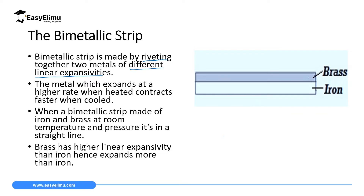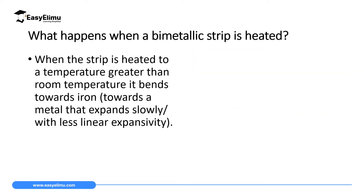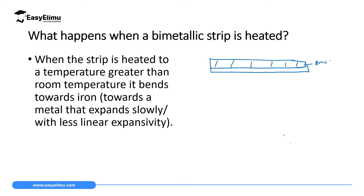Brass expands more than iron, meaning brass has a higher linear expansivity than iron. When the bimetallic strip is heated, brass expands more and covers a greater distance than iron. Since the two metals are riveted together, they bend — the metal that expands more forms the outer part of the curve, covering the larger distance.